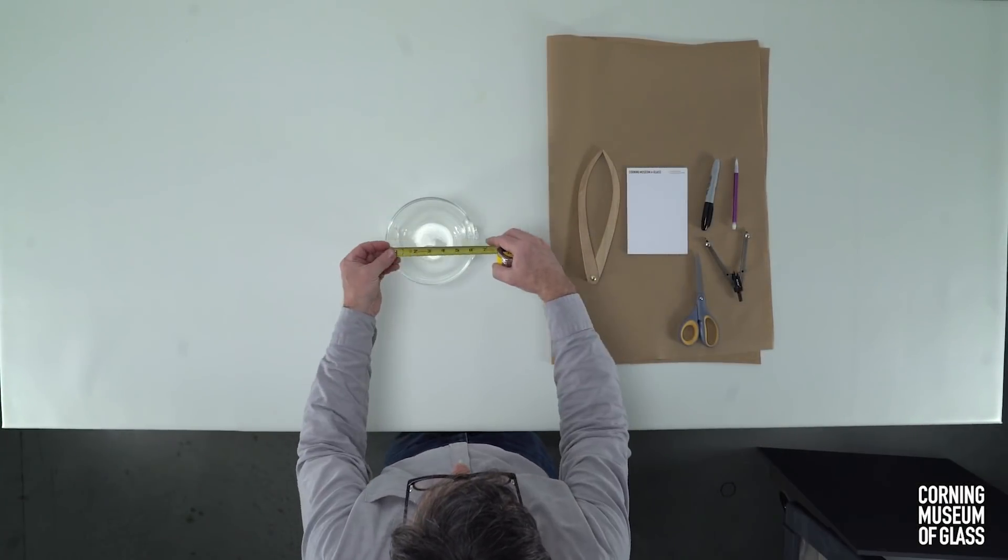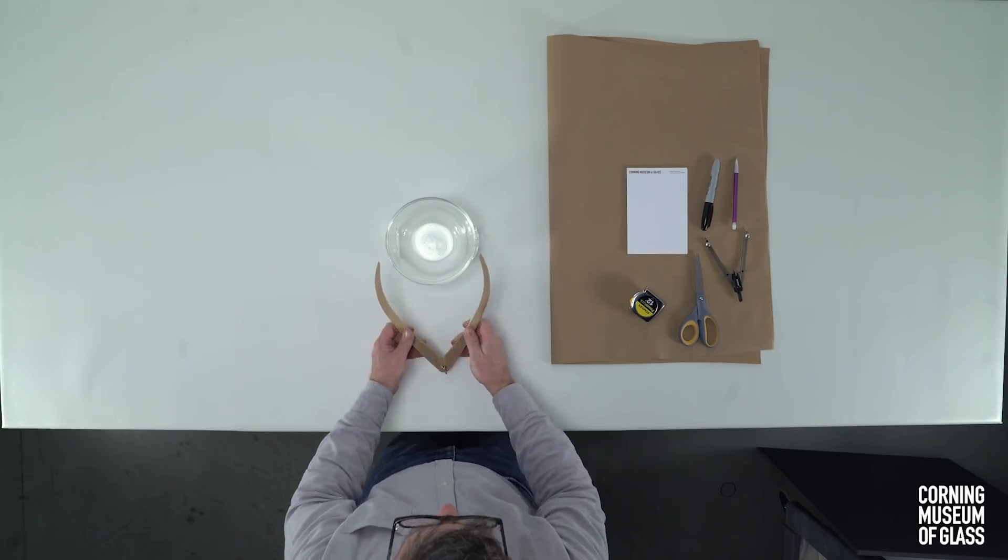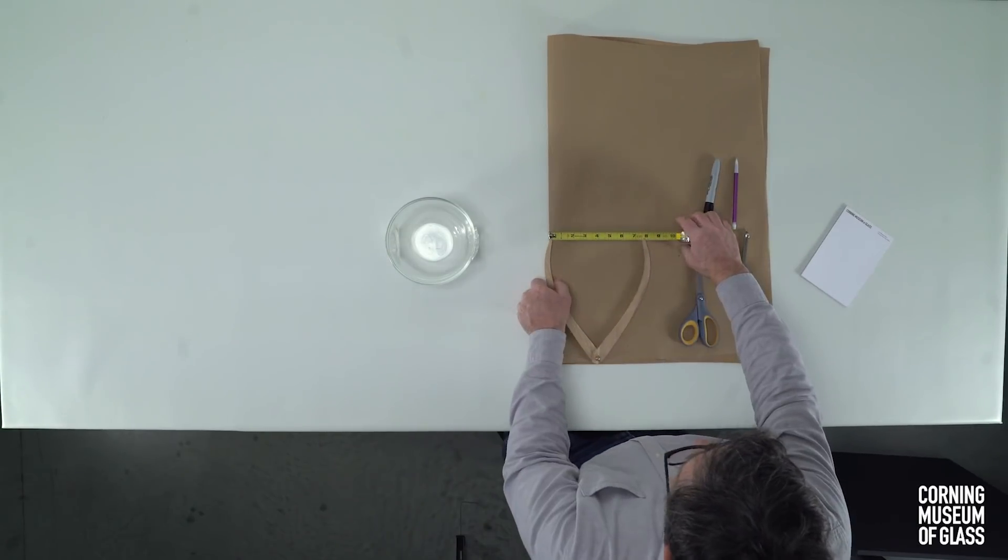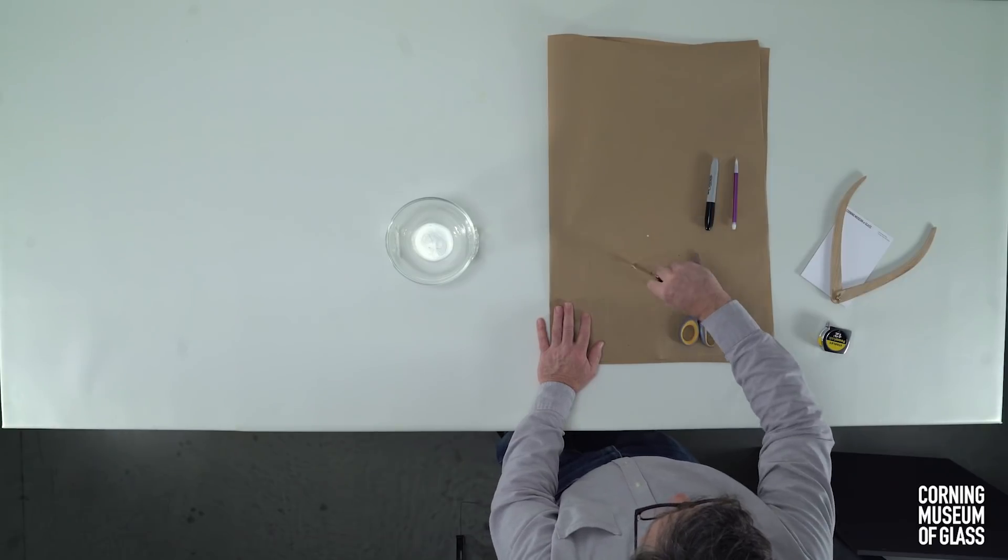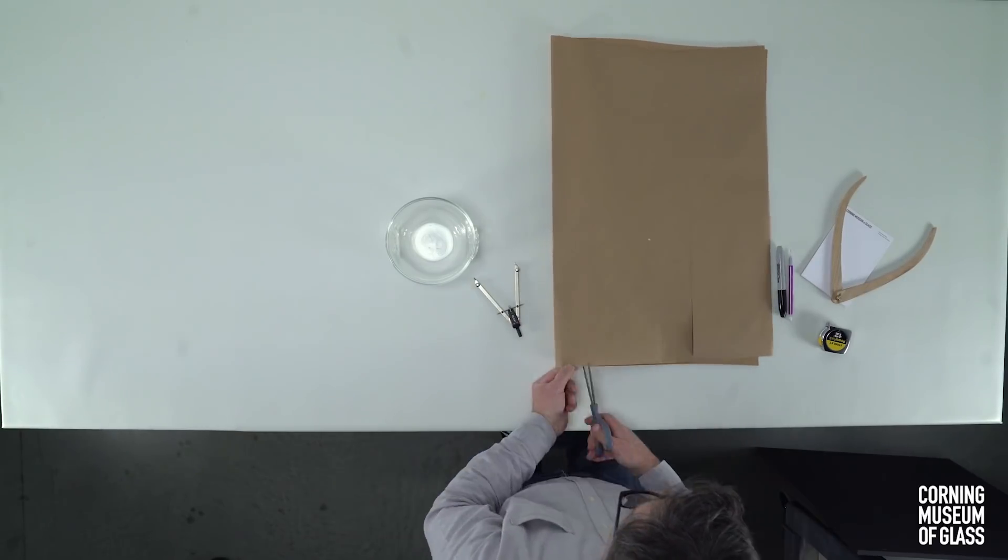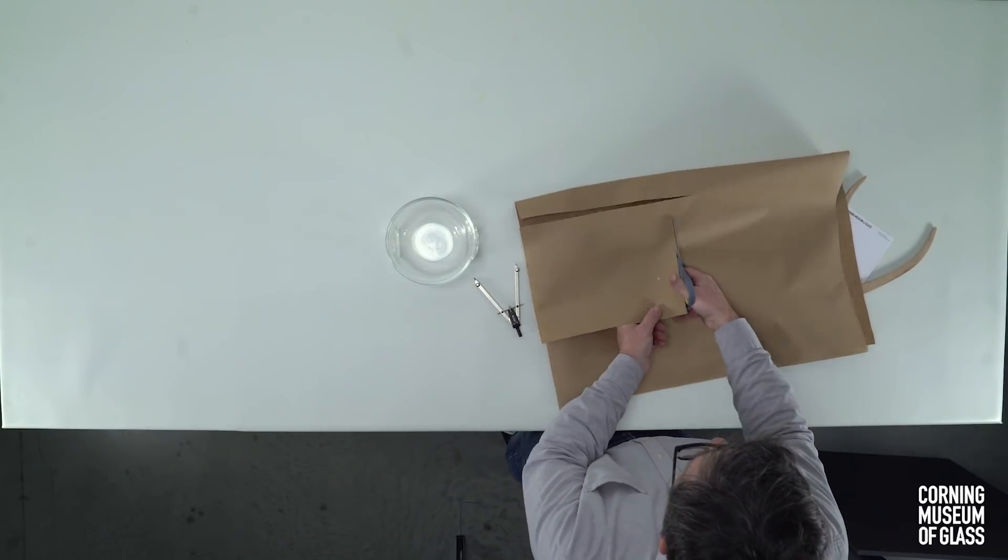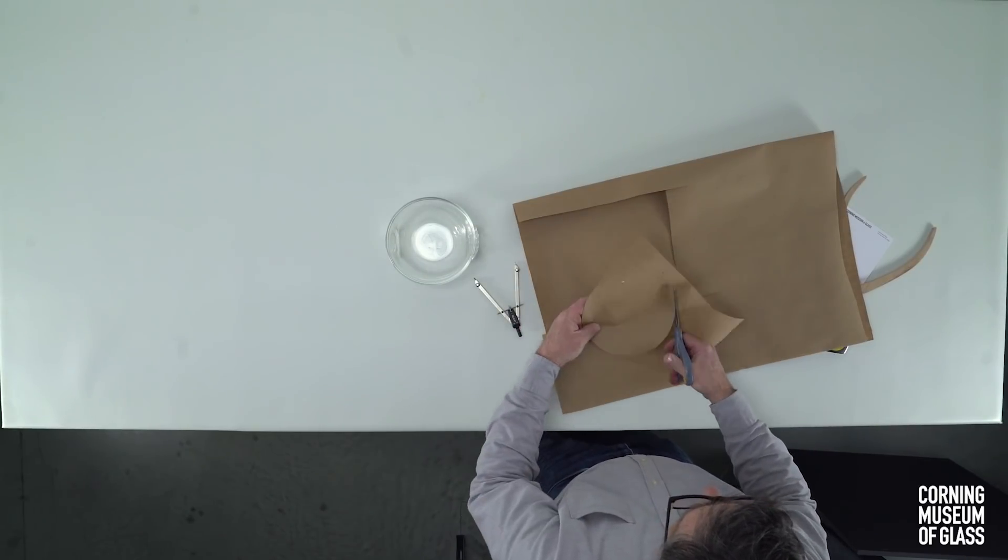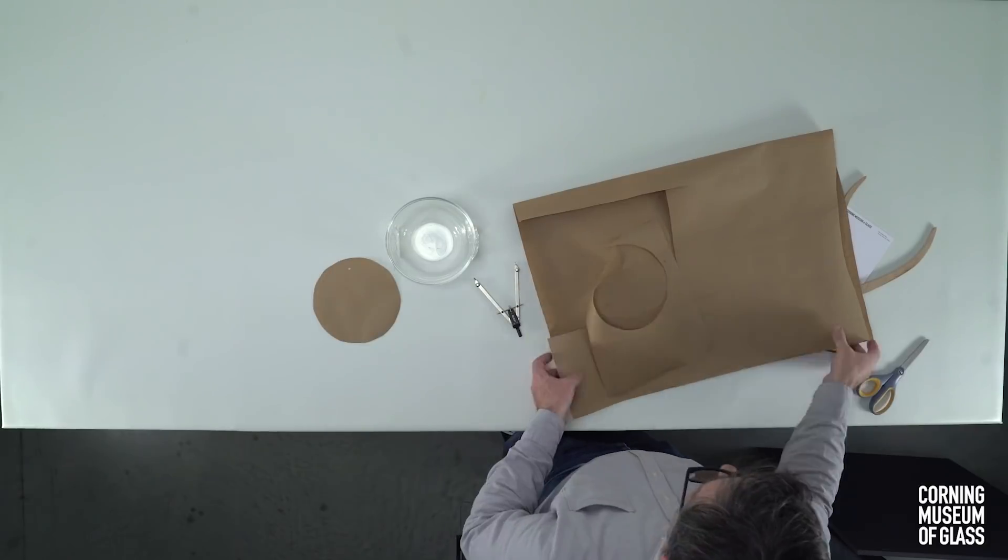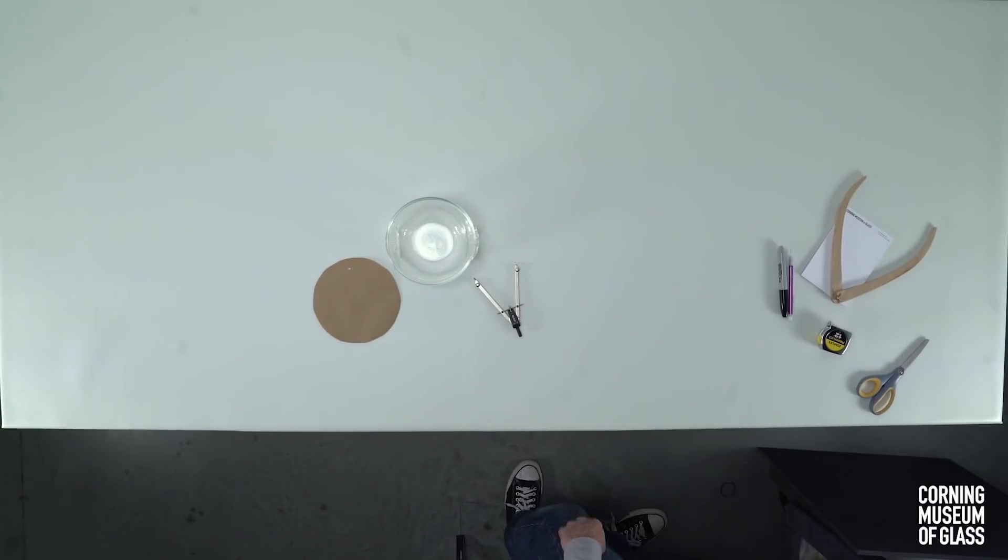Using a tape measure or calipers, determine the amount of space your objects will require inside the crate, and then make a paper template. You'll want objects to fit snugly within the foam, yet not so tight as to potentially cause damage. As a safeguard, we recommend making your template 1/16 inch to 1/8 inch larger than the actual objects.